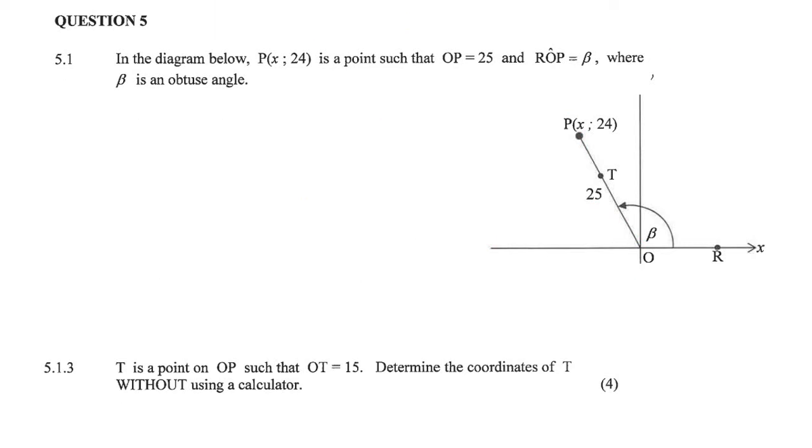And here's the last part. So it says that T is a point on OP, so there's T, we can see it. It's a point on the line OP, such that OT is 15. So this is only 15. Determine the coordinates of T without using a calculator.